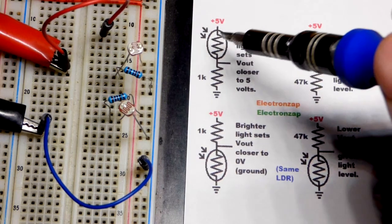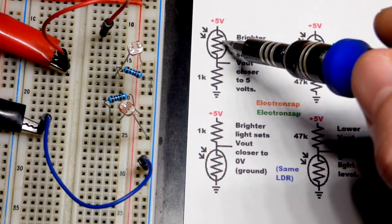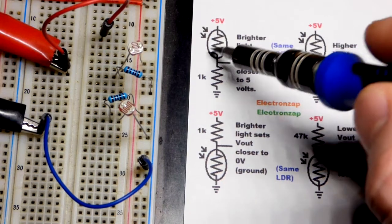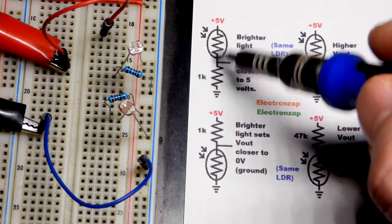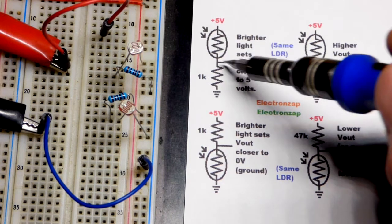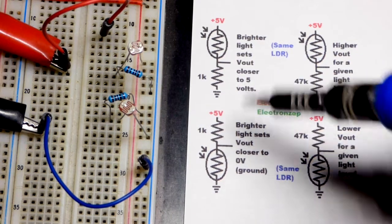As light falls on it, its resistance starts going down and it starts making a better connection there. So in this case with the 1000 ohm resistor down there, very bright light will make pretty much a direct connection and you'll have 5 volts.